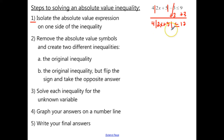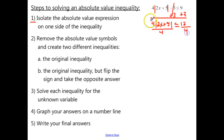Remember, as you're writing, don't let your absolute value signs become 1s — so don't think this is 12x plus 51. Be careful about that. Now we have this 4 multiplied on the outside, so we want to divide both sides by 4 to cancel that out. Then we're left with the absolute value of 2x plus 5, less than or equal to 12 divided by 4, which is 3. There's step 1.